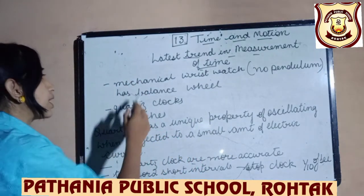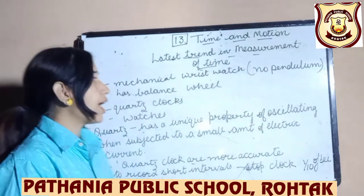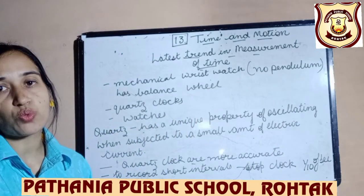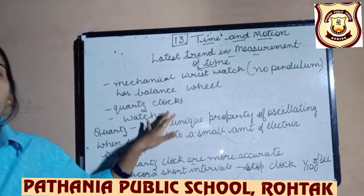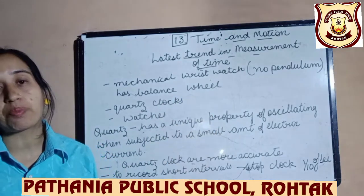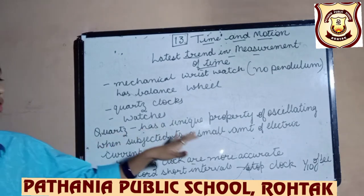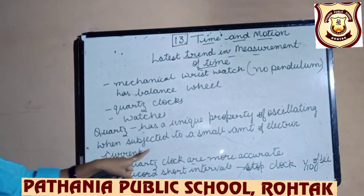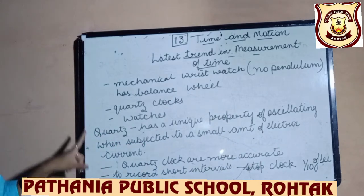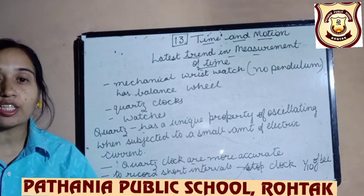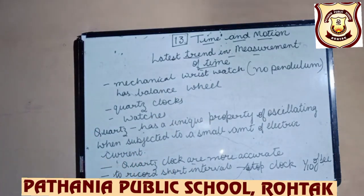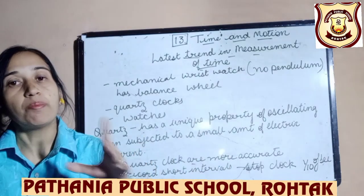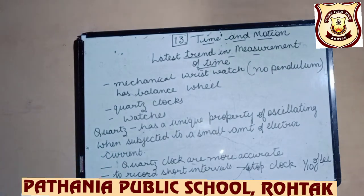A mechanical wristwatch contains no pendulum; it all depends upon the balance wheel. The quartz clock is widely used nowadays. These watches measure time very accurately, that's why we prefer them. Quartz has a unique property of oscillating when subjected to a small amount of electric current. We utilize this property in the watch. Quartz clocks are more accurate than pendulum watches.